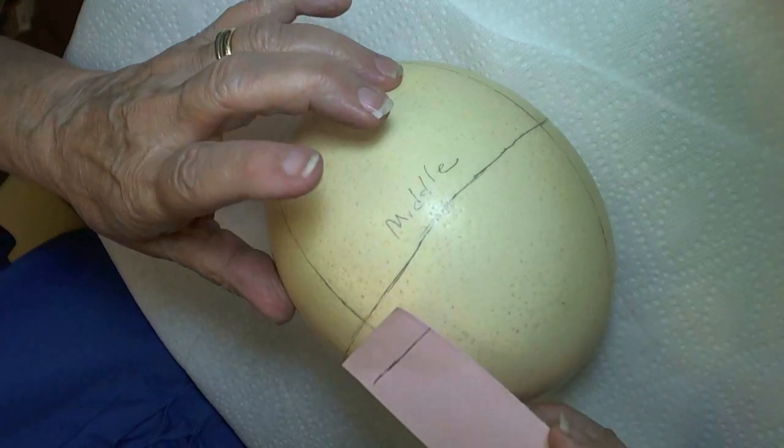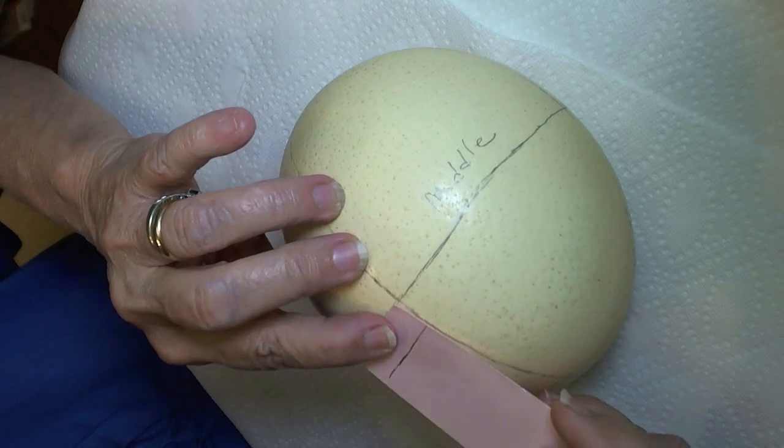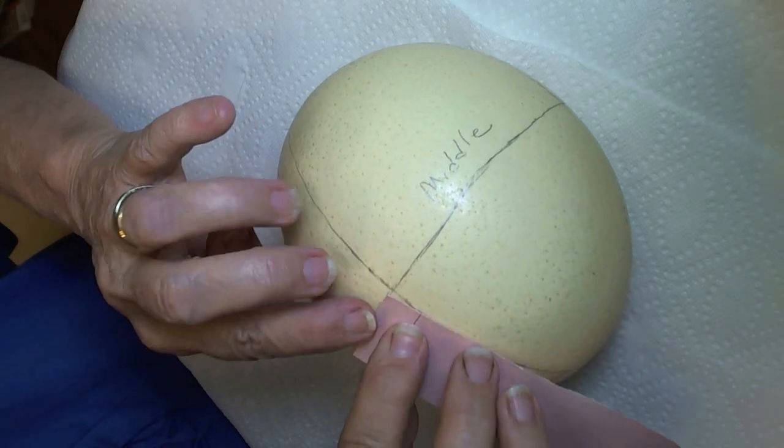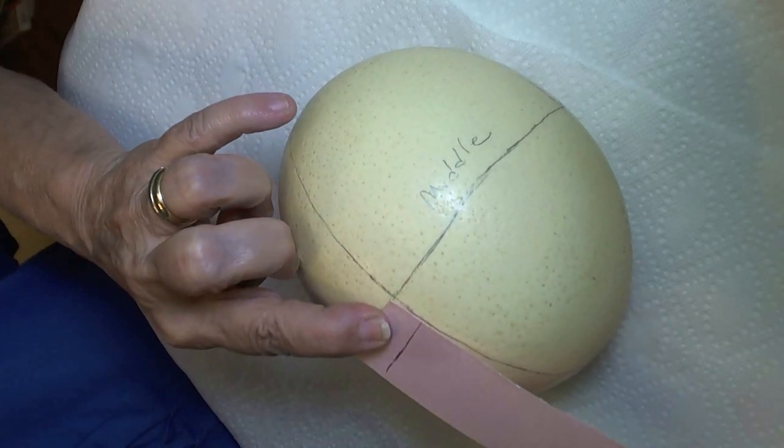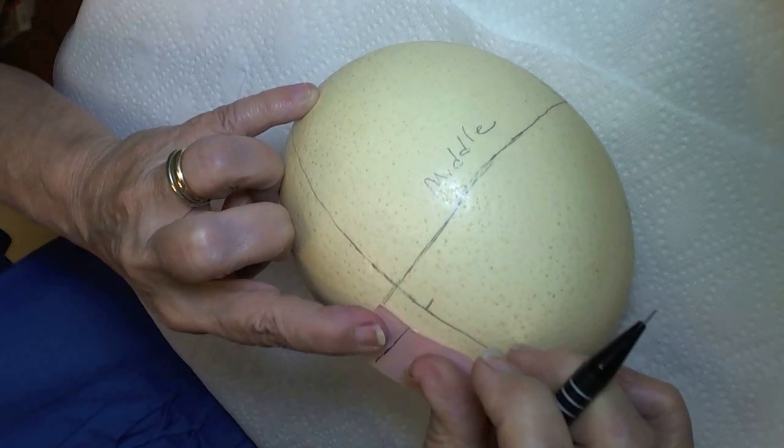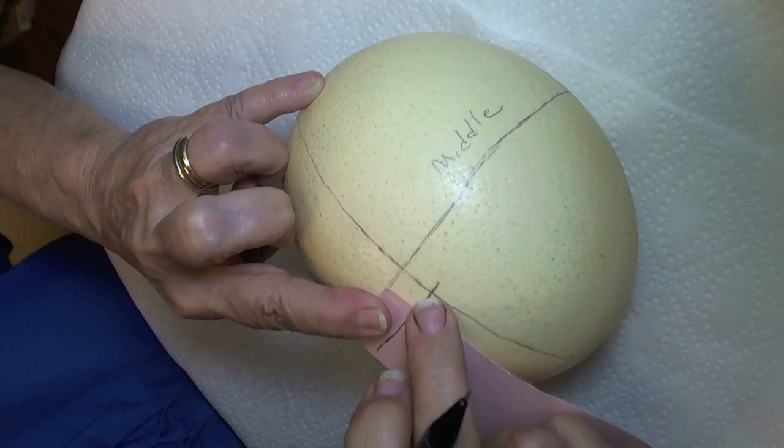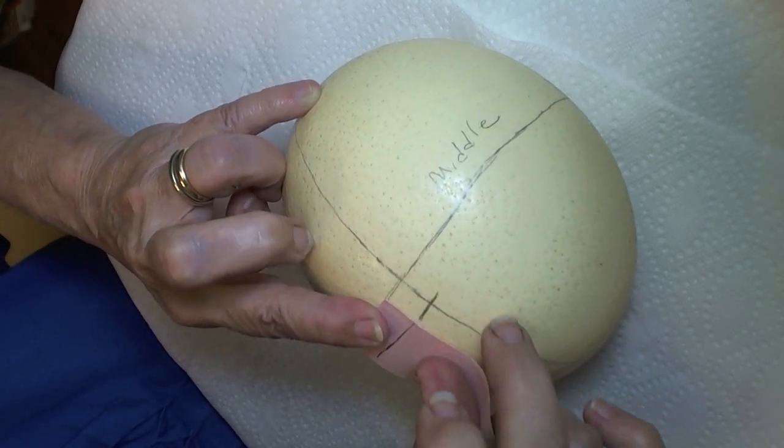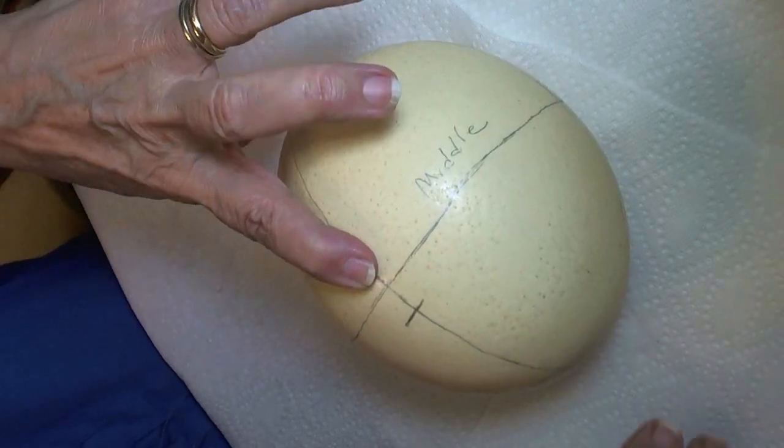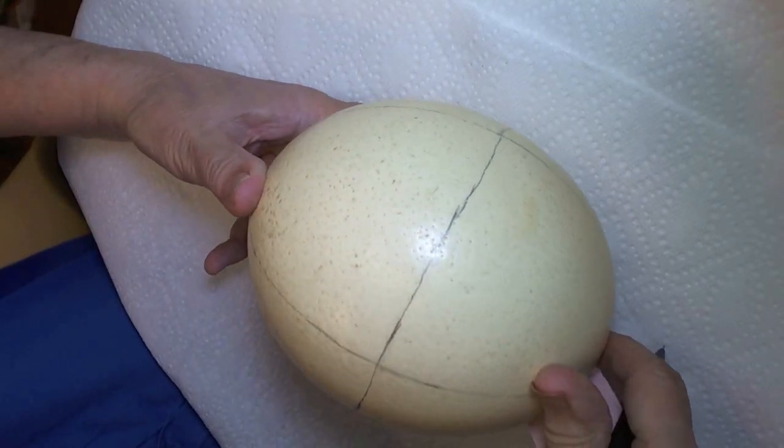Now I'm going to lay this on my egg and I'm going to mark the egg. I'm going to do the exact same thing on the opposite side of the egg.